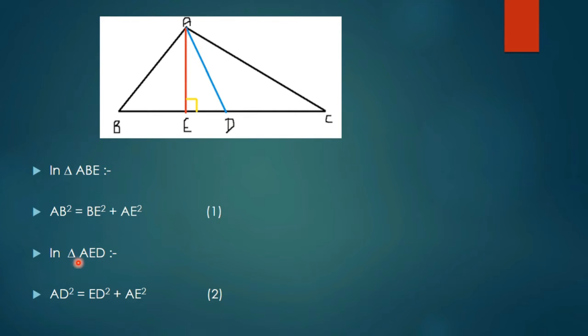Now in triangle AED, again using Pythagoras theorem: AD square is equal to ED square plus AE square. Say that is equation number 2.